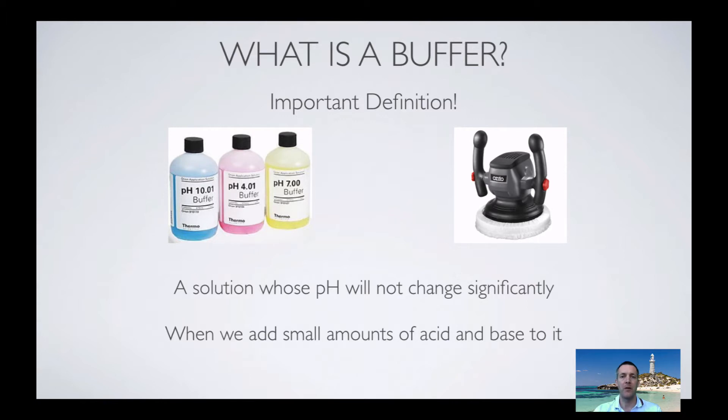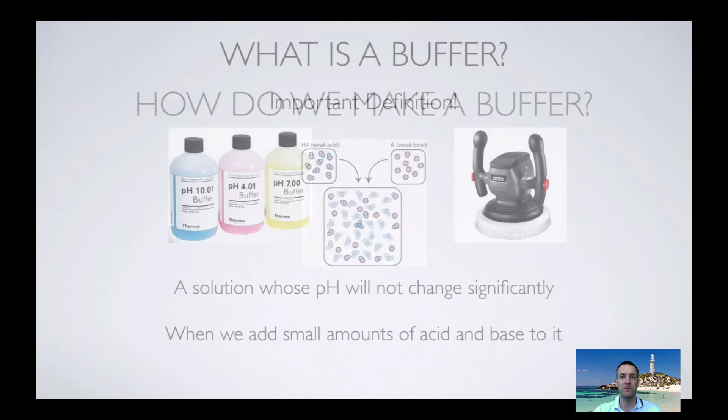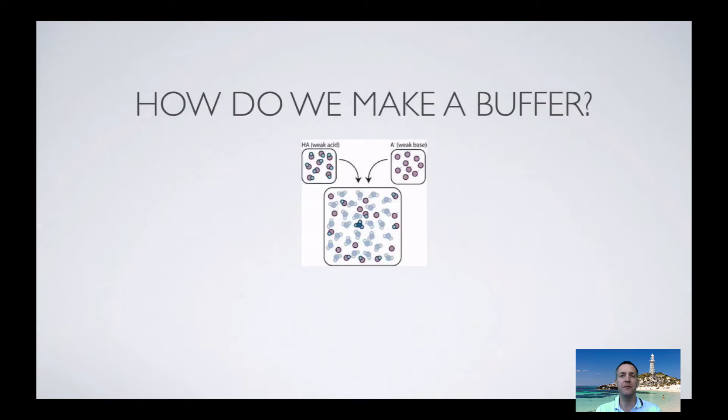How are we going to make a solution like this? Well, if you've got a solution whose pH doesn't really change when you add acid or base to it, then there must be something in that solution that is able to react with acids and with bases and basically neutralize them. So how could we design a solution like that? If you want something that's going to react with acids, you put base into your solution. If you want something that's going to react with bases, you put an acid in there.